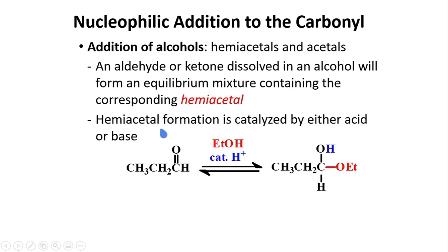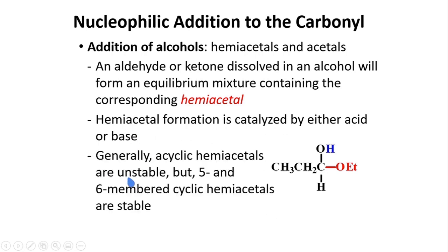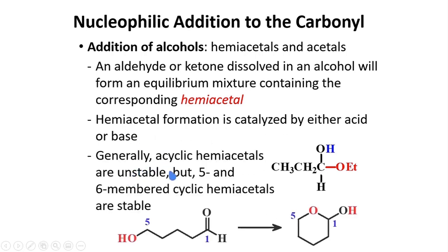Hemiacetal formation is catalyzed by either acid or a base. I've shown you an acid catalyzed hemiacetal formation. Generally, acyclic hemiacetals are unstable, but five and six-membered cyclic hemiacetals are stable.